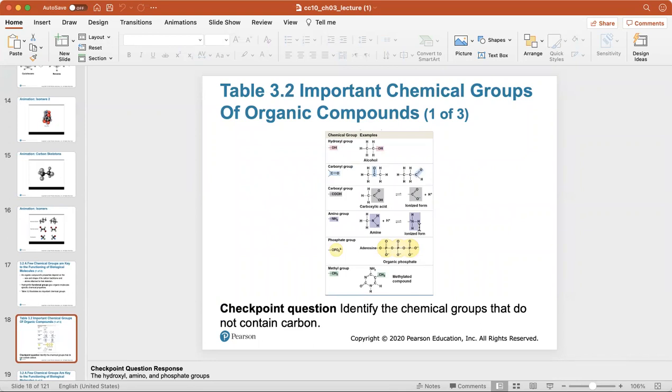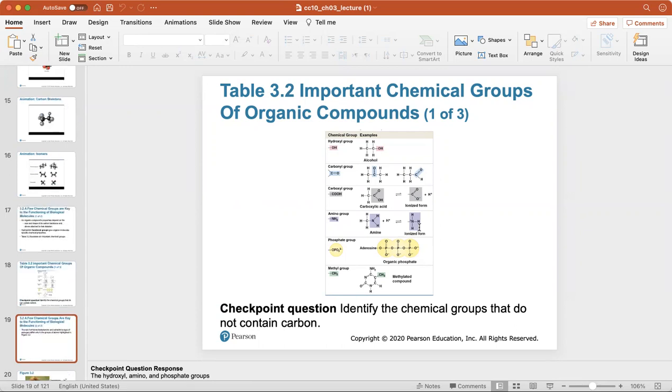These are different chemical groups. You can have an OH called a hydroxyl group, a carbonyl group, carboxyl group, an amino group, a phosphate group, and a methyl group. So these are different types of organic compounds based on the chemical group.